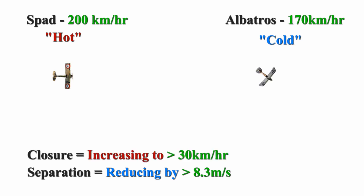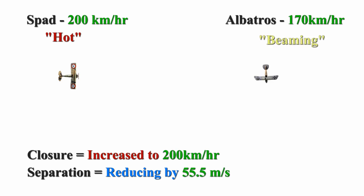As the aspect begins to change to a hot-on-hot aspect, the closure will increase. Now as the Albatross moves to the beaming aspect, he's travelling perpendicular to the SPAD. This means the Albatross has a speed of zero relative to the SPAD, who now has a closure rate of 200 kmph.